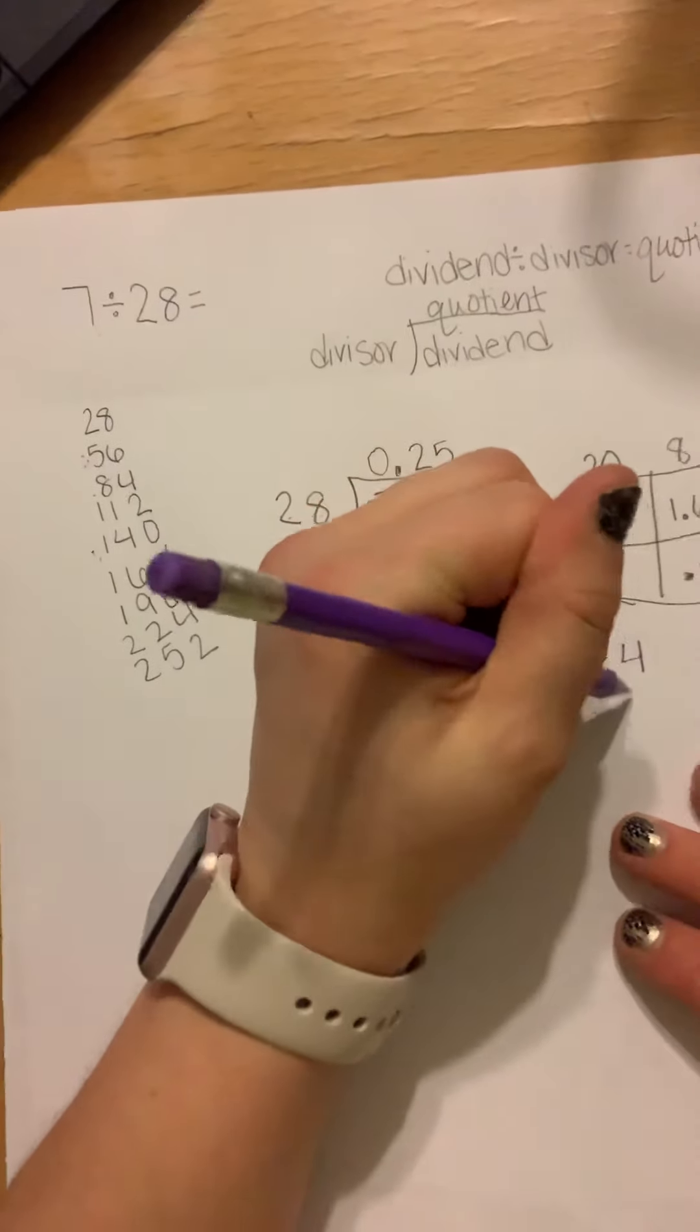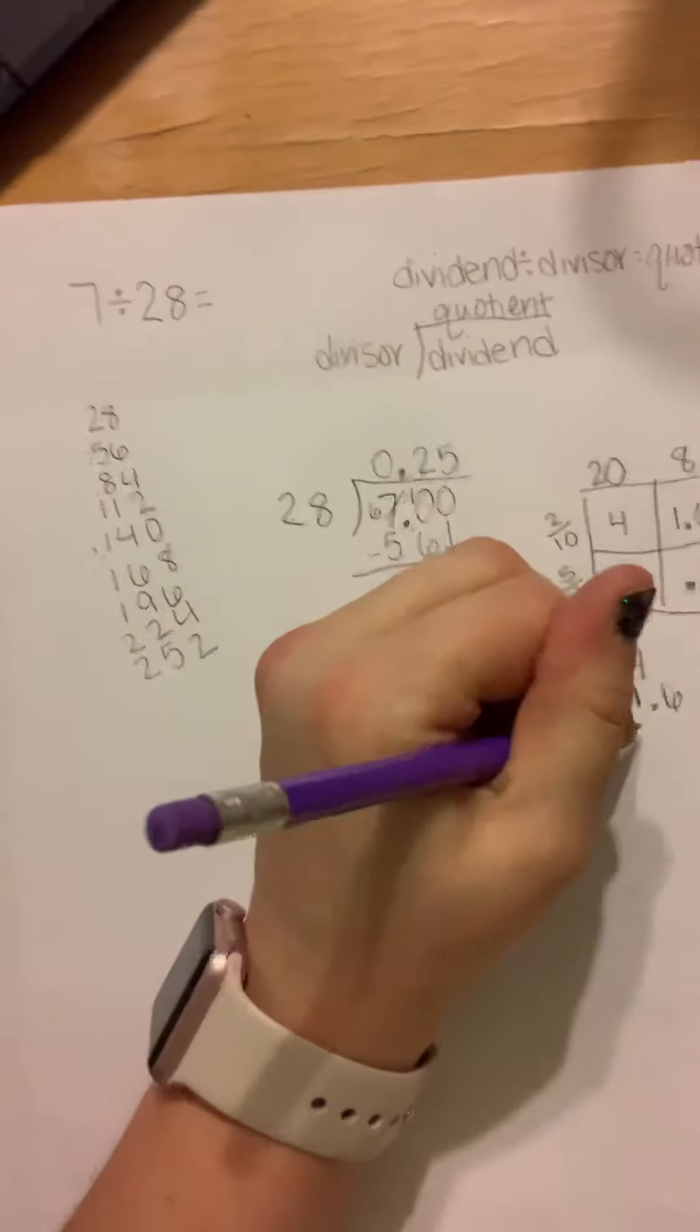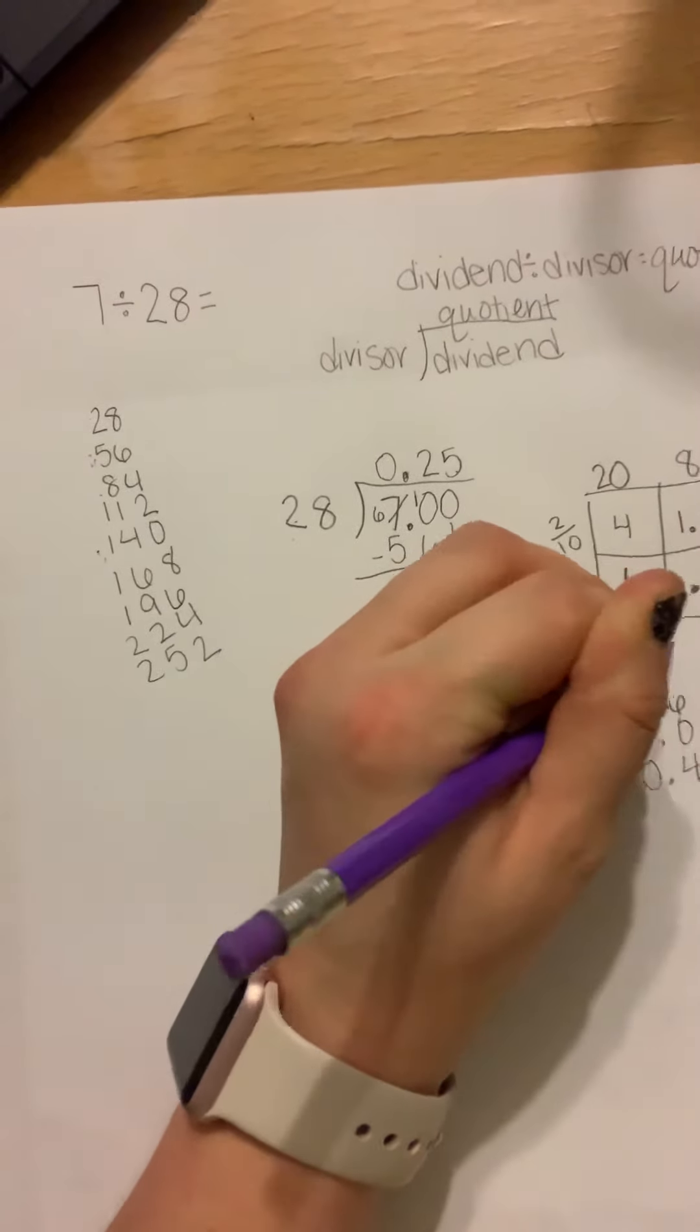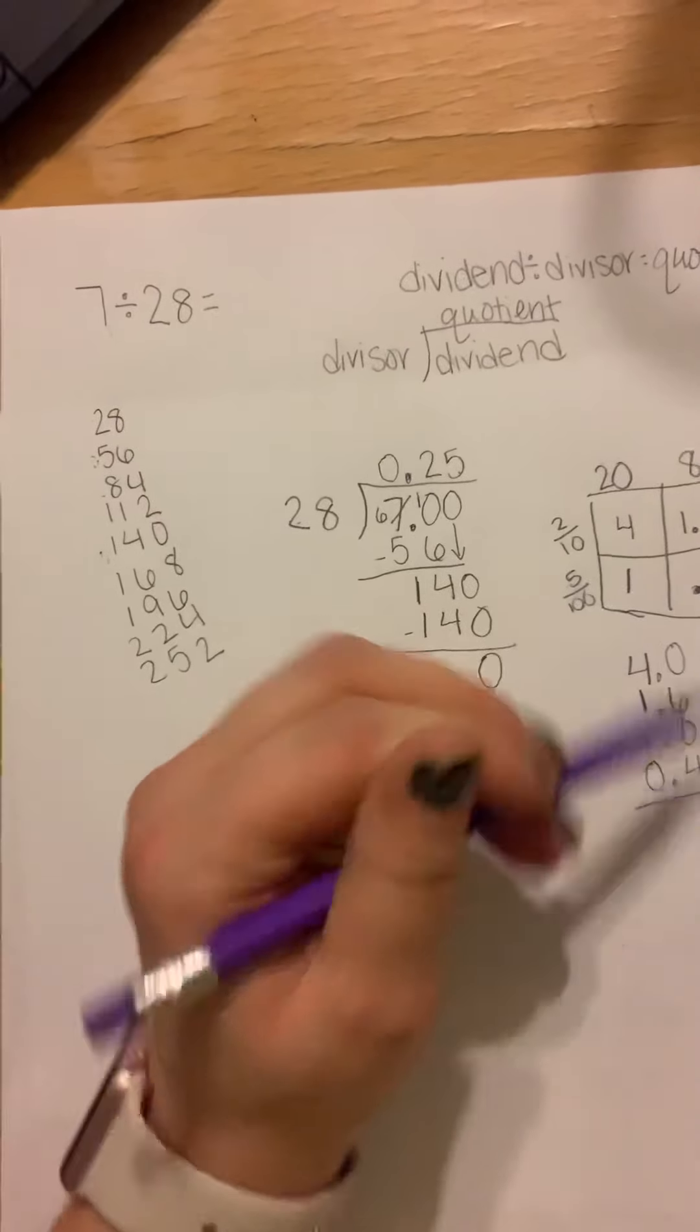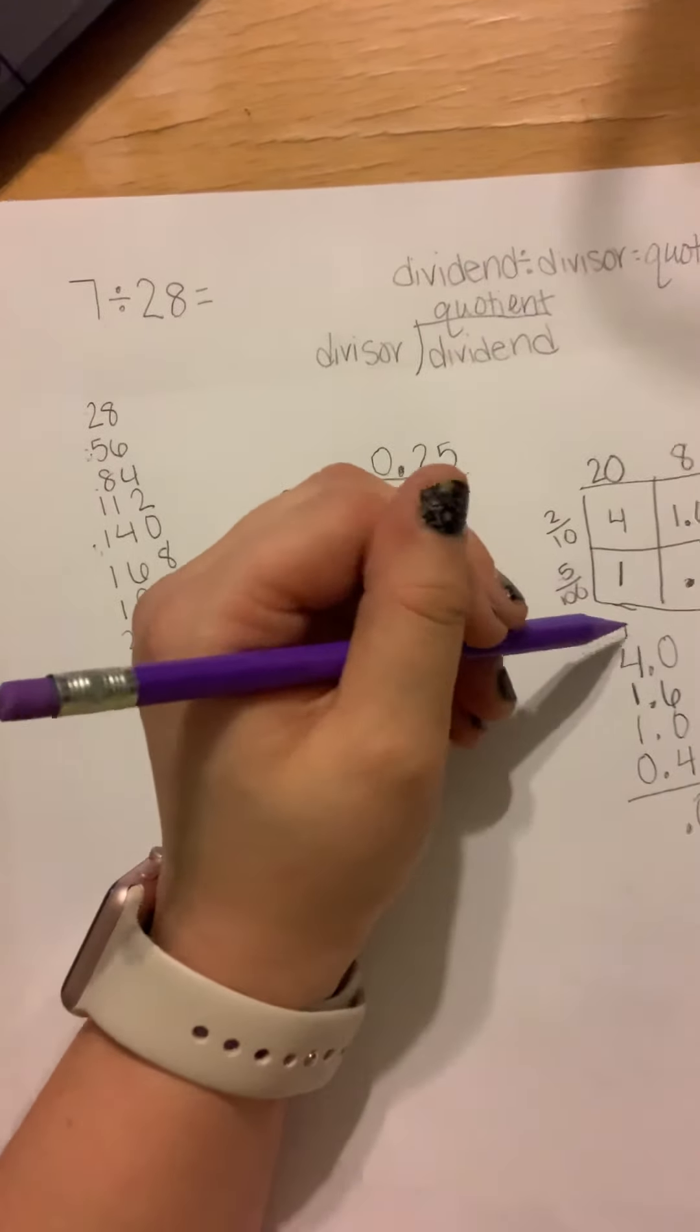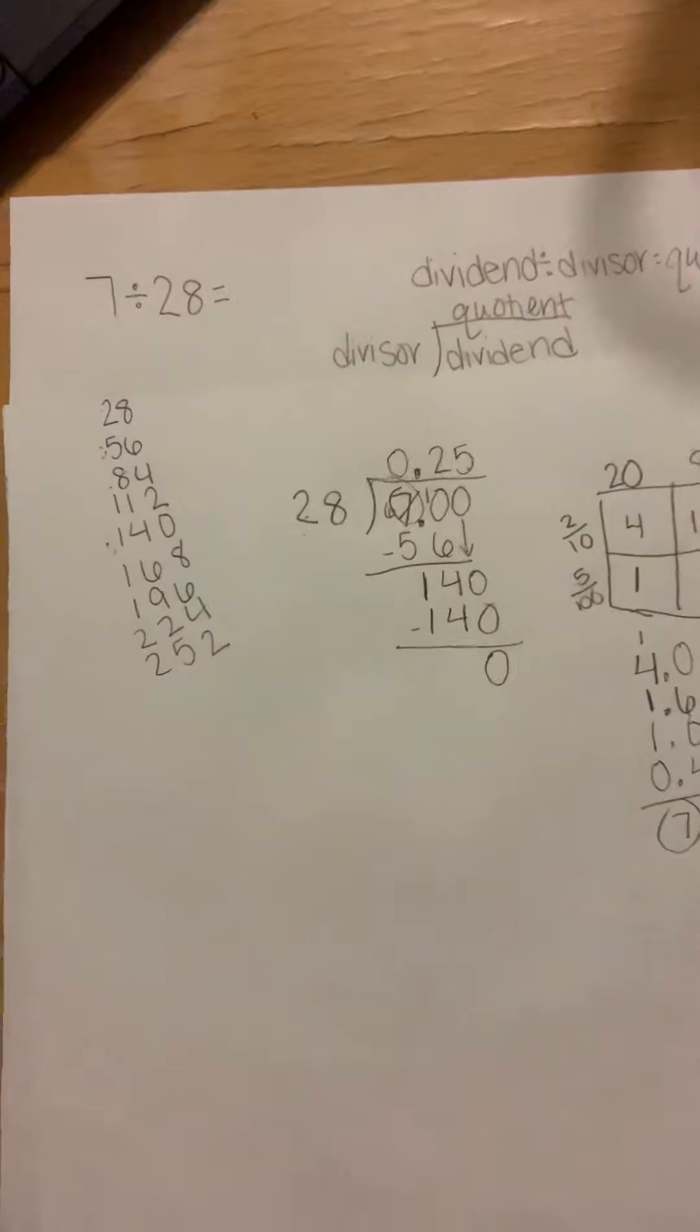Now I'm going to add them together. 4, 1 and 6 tenths, 1 and then 4 tenths. And I can add decimals and zeros to the numbers without the decimals. 0 plus 6 plus 0 plus 4 is 10. Put down the 0, carry the 1. And 1 plus 4 plus 1 plus 1 is 7. So our work checks out. We did great. Hope this helped.